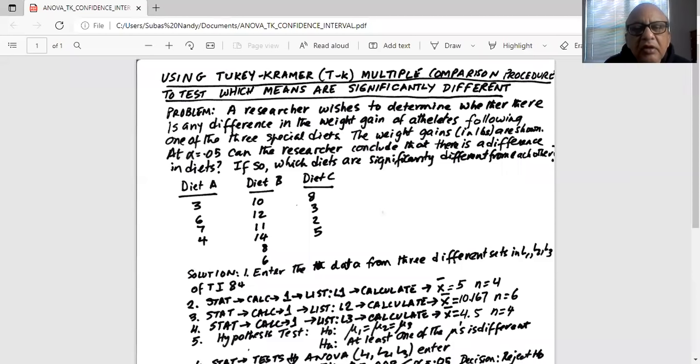Using a TK multiple comparison procedure to test which means are significantly different. A researcher wishes to determine whether there is any difference in the weight gains of athletes following one of the three special diets. The weight gains in pounds are shown at alpha equal to 0.05. Can the researcher conclude that there is a difference in diets?